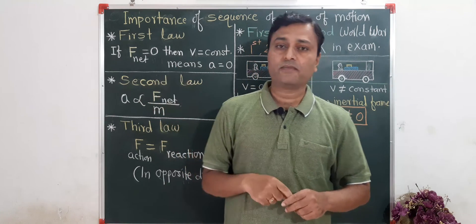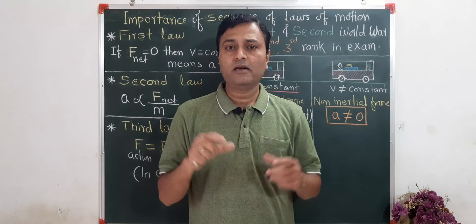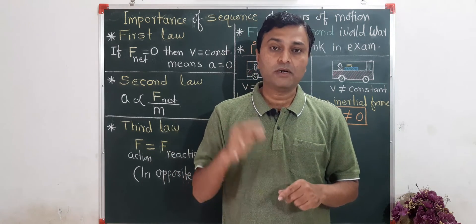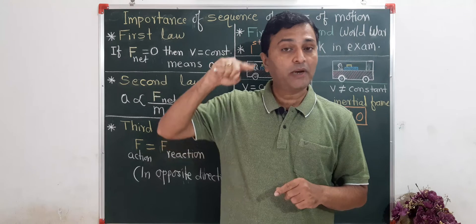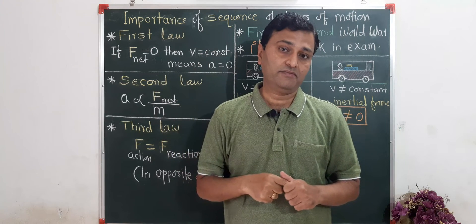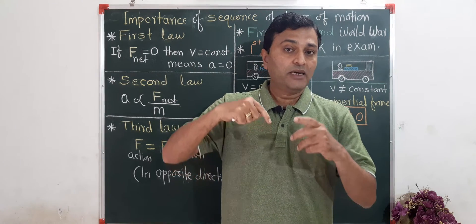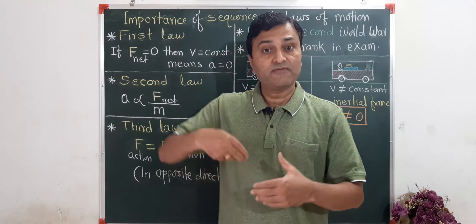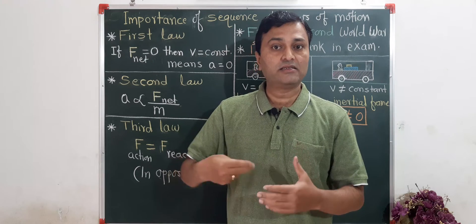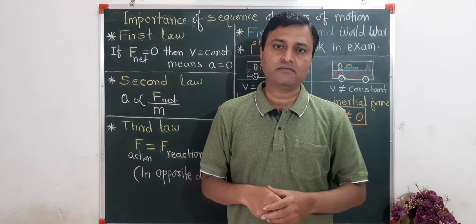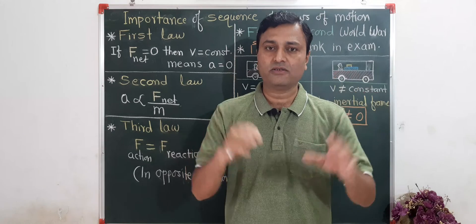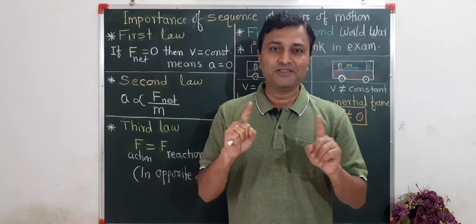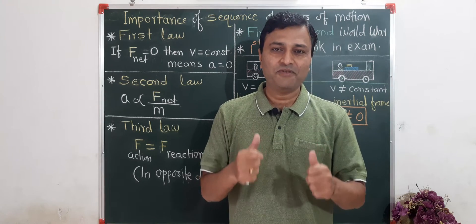You know, before Newton, Kepler also developed laws of motion related to planetary motion. But Kepler's laws have no fixed sequence — you can't say this is first, this is second, this is third. You can take any of Kepler's laws as first; there are only three laws, not first, second, third in a fixed order. But for Newton's laws, that is not the case. Why? We will see.